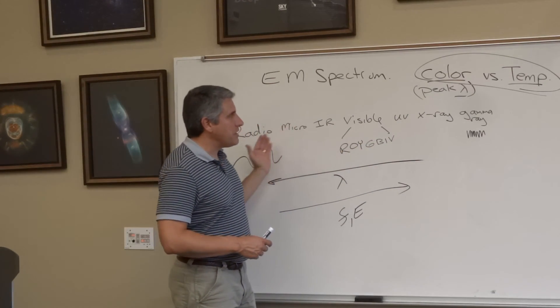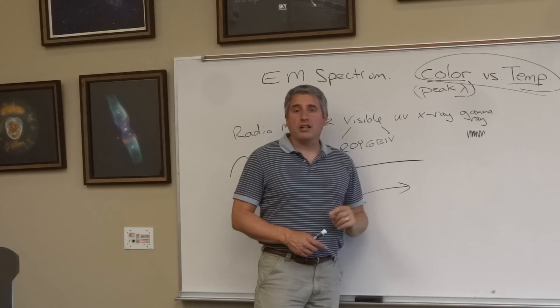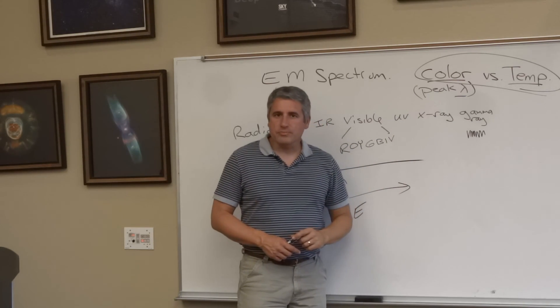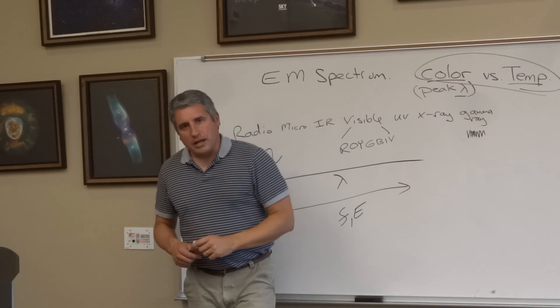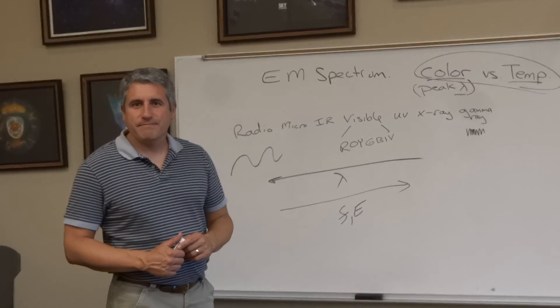So astronomy uses all the different types of the spectrum as we alluded to before, and there is a connection between color and temperature. We'll talk in a minute about what else we can learn from light.